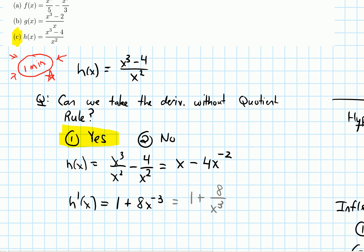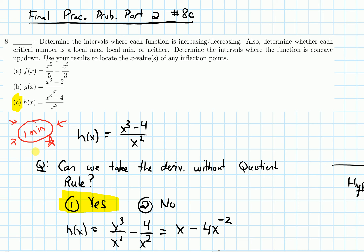Let's first think about where this function is increasing and decreasing, then move on to classifying critical points as local mins or maxes, then concavity. First I want to give you the chance to try this problem. Pause the video for about four minutes — that's likely not enough time to finish it but hopefully you'll make progress on increasing and decreasing and maybe finding local mins and maxes.